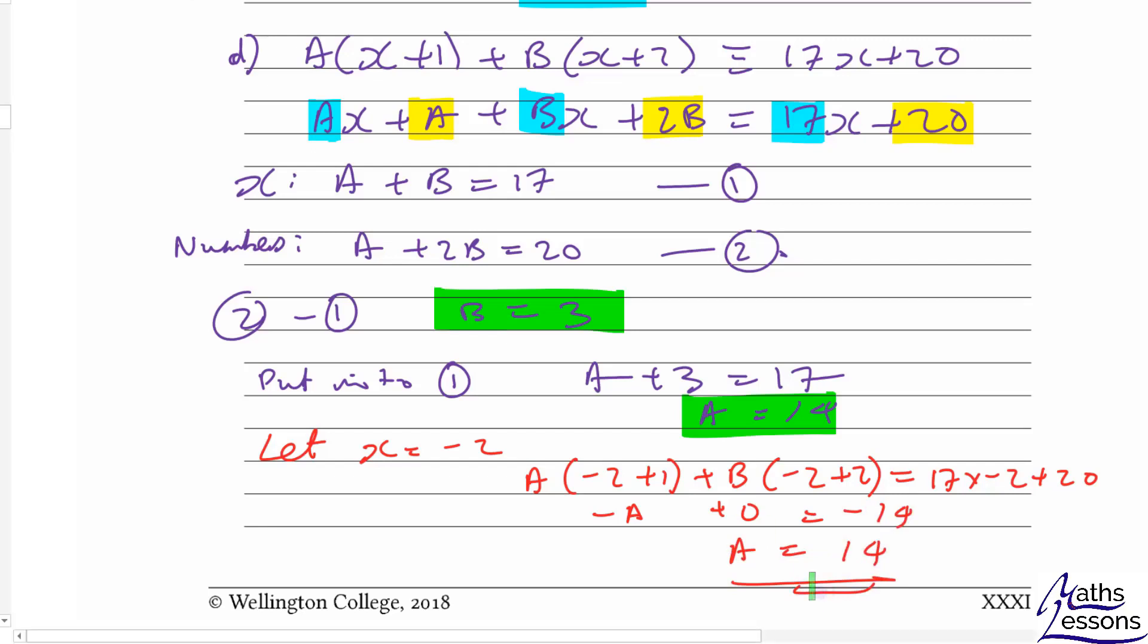You can do something similar to find b. We'd make the x in the a bracket equal to minus 1 and that'll give you 0. Then minus 1 plus 2 is 1, so 1b would equal minus 17 plus 20 which is 3, so b equals 3. You can see there are two ways to do these questions. This one only works if making a bracket 0 eliminates that variable and leaves you just the other variable, so be careful when doing that.